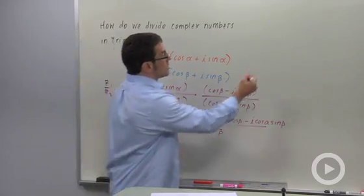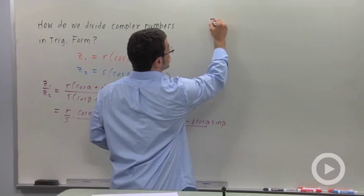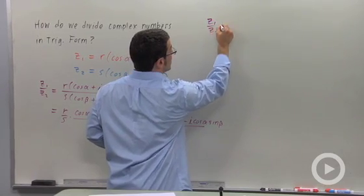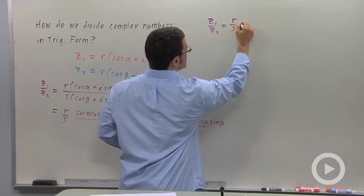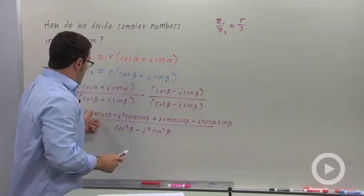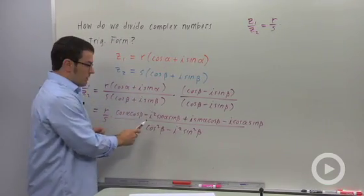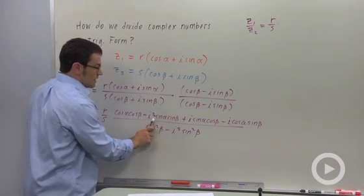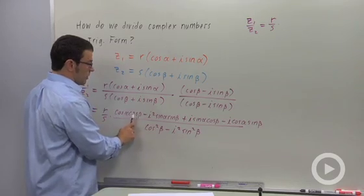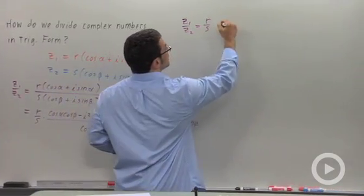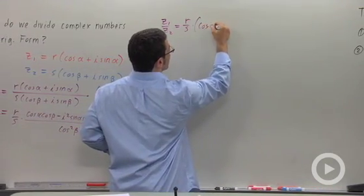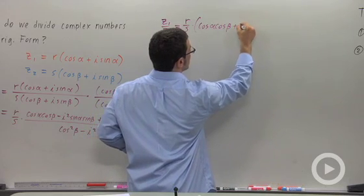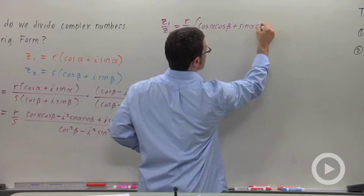R over S times that numerator. So let me copy that up here. Z1 over Z2 is R over S times. And again, I squared is negative 1. So this will become plus sine alpha sine beta. Cosine alpha cosine beta. Cosine alpha cosine beta plus sine beta plus sine alpha sine beta.